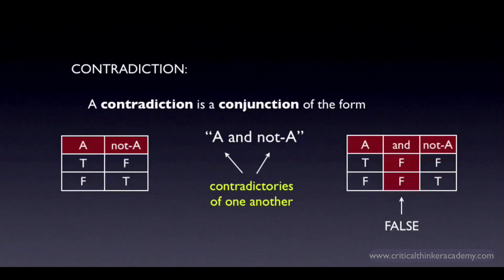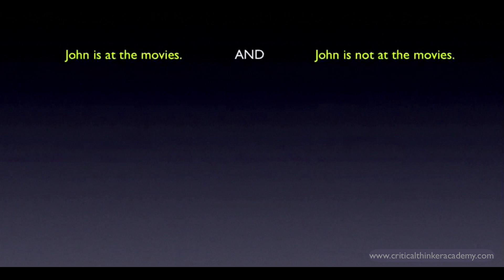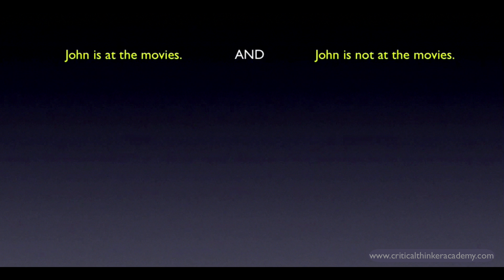Now, there's a minor subtlety in this definition of a contradiction that I want to mention. Here's a pair of claims: 'John is at the movies, and John is not at the movies.' This is clearly a contradiction, since these are contradictories of one another. John can't be both at the movies and not at the movies at the same time.